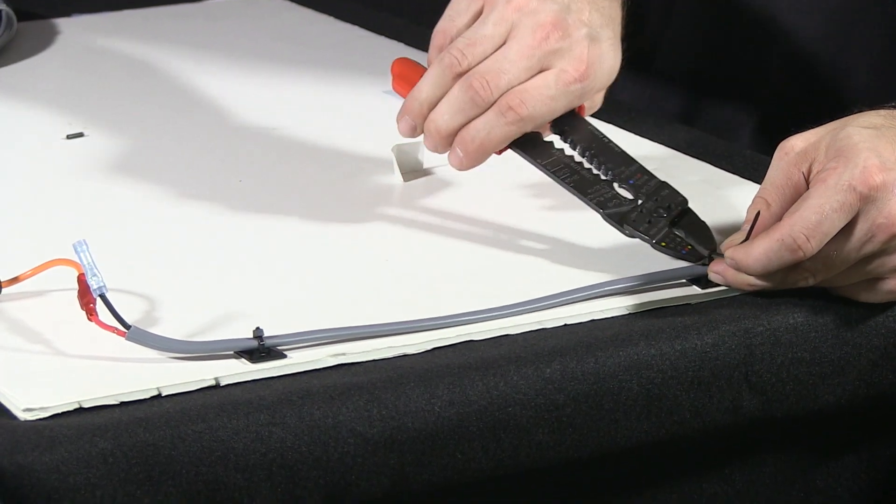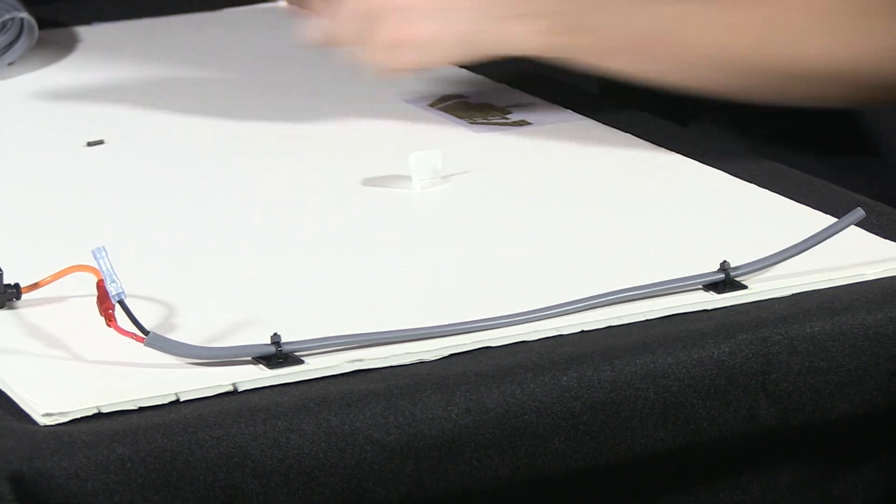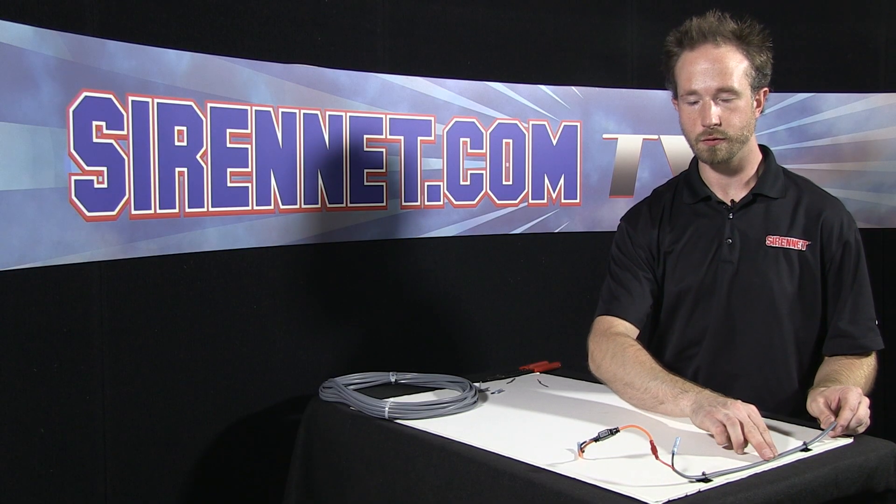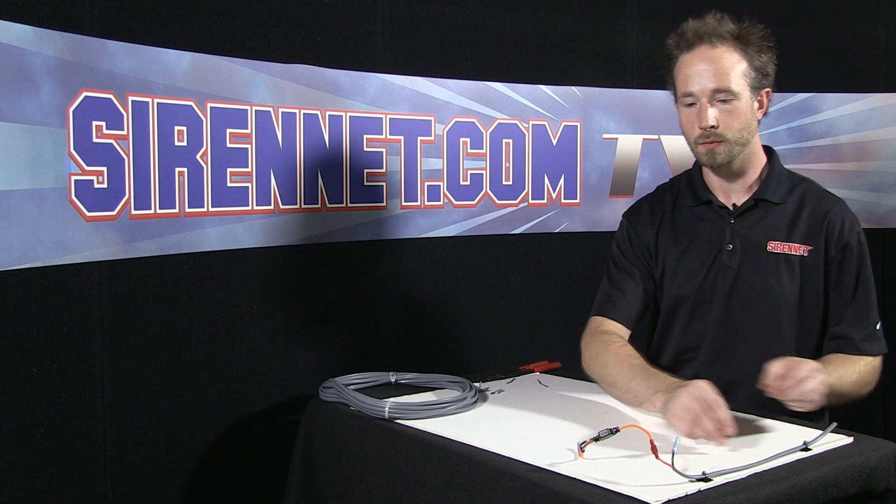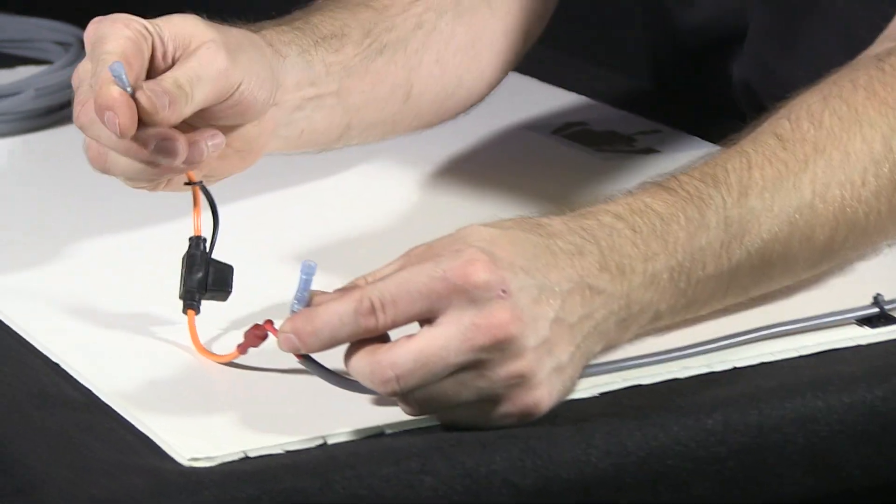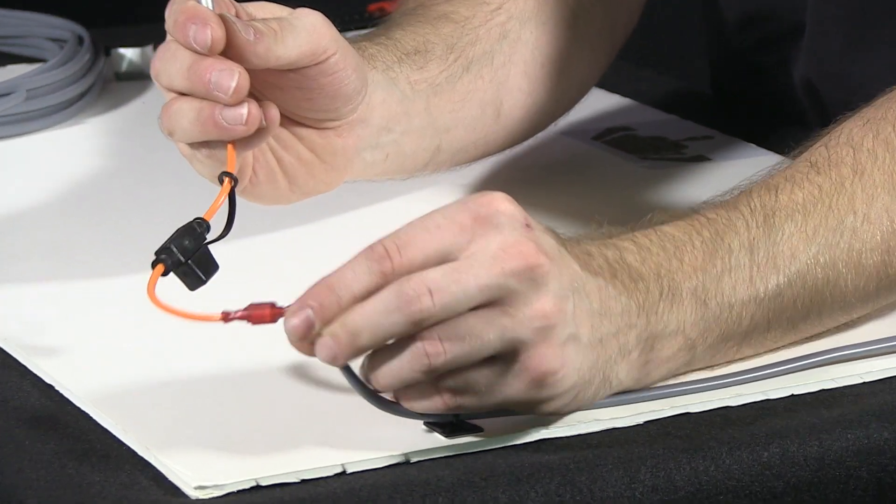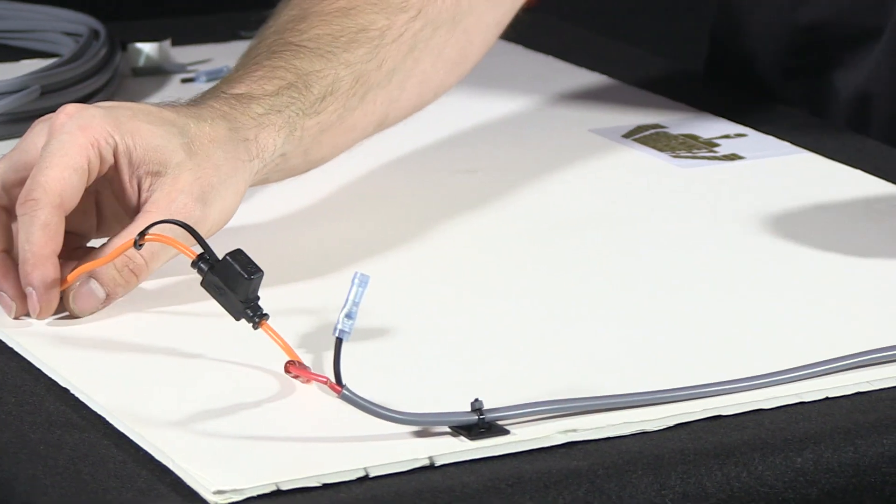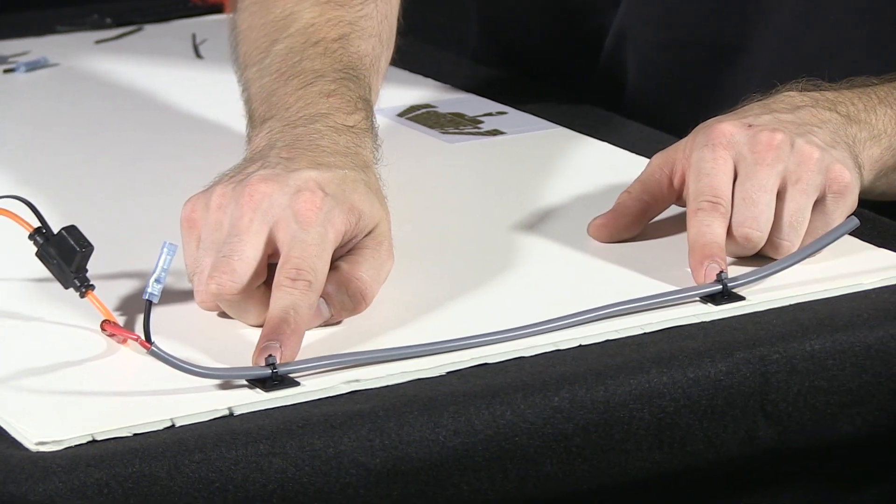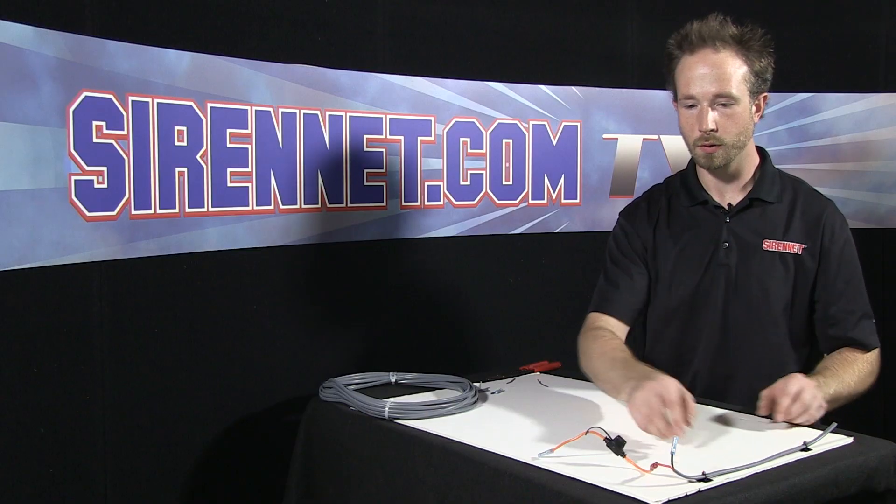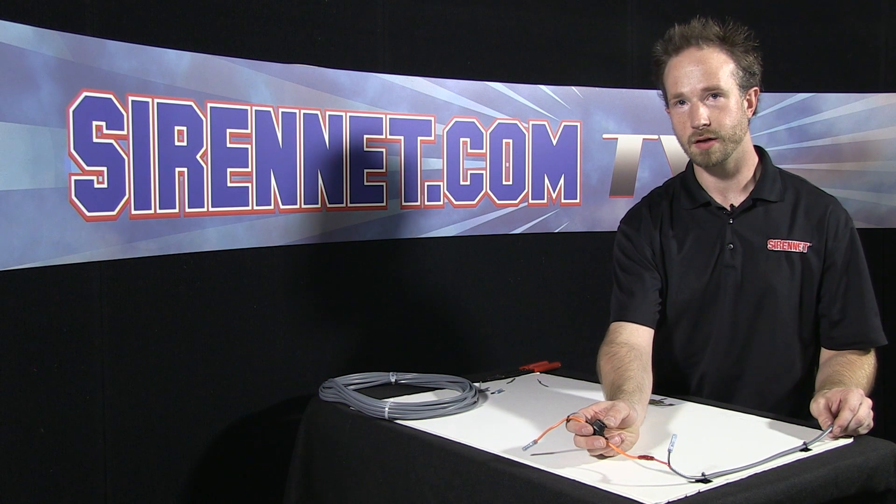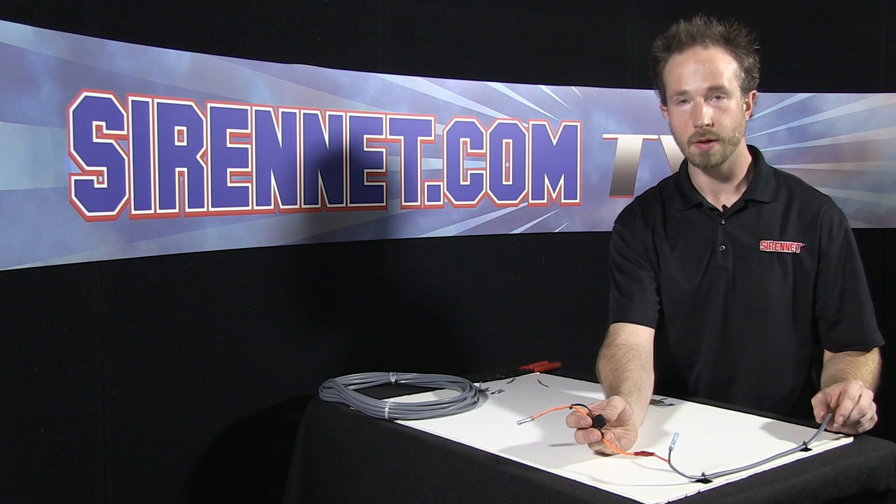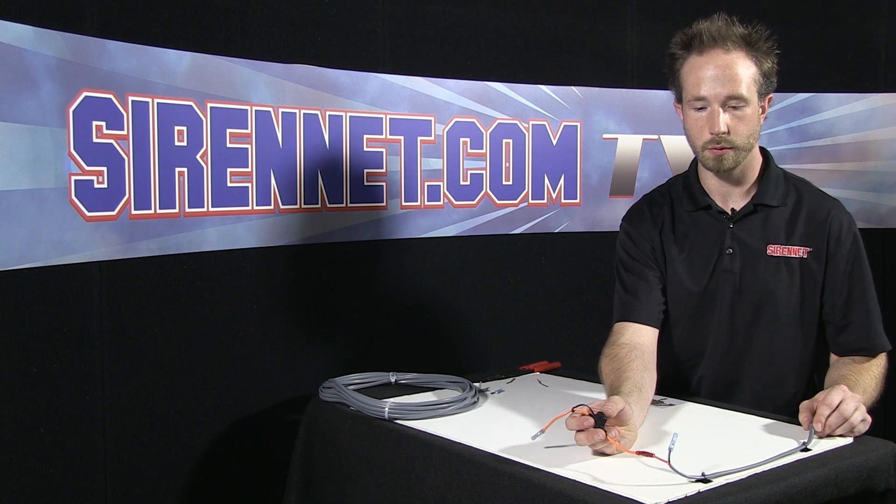So again we've taken two strand 14 gauge harness, butt connectors, male and female quick connect, moisture resistant inline fuse holder, and for securing the harness zip ties and zip tie holders. This is a quick example of how you can take some of the components we're offering on SirenNet installation, put them together, and use them to work your vehicle through your installs.